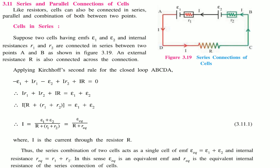Now we look at series and parallel connections of cells. Like resistors, cells can be connected in series, parallel, or a combination. When two cells with EMFs E1 and E2 and internal resistances r1 and r2 are connected in series, the same current passes through both, and an external resistance R is connected across the combination. We apply Kirchhoff's rule moving in the ABCDA direction.